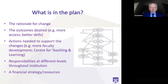So what should be in a plan? The first thing is the rationale for change — why instructors need to move in this direction — and this really has to come from senior management, although increasingly instructors themselves are putting pressure on management to provide the resources needed. Then you want to set out what kind of outcomes you want from a plan to move to online learning: more access, more lifelong learners, better skills, and so on, so you have a way of measuring the success of the plan.